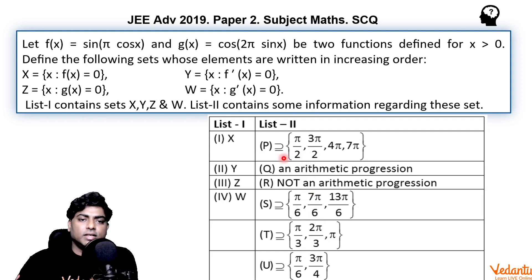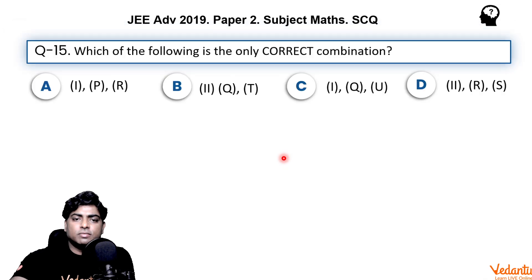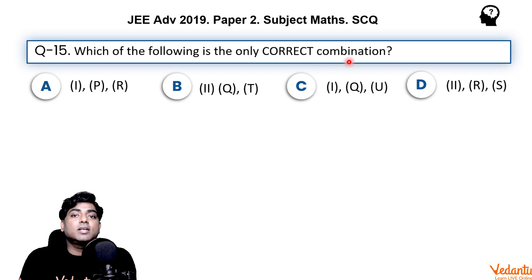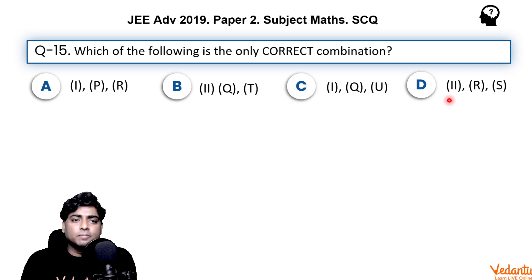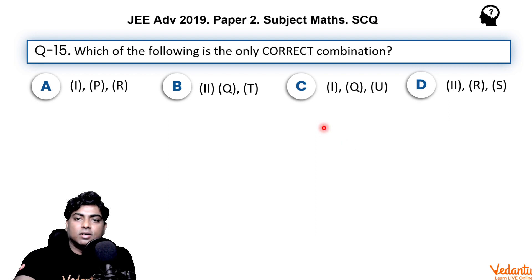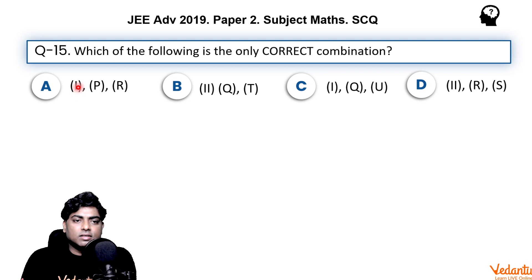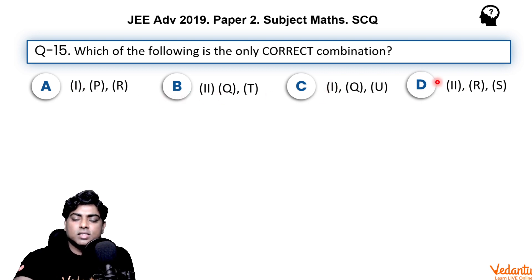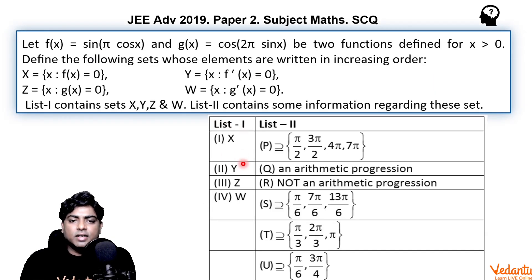The first question, question number 15, asks which is the only correct combination. In the options, only entries 1 and 2 from List 1 — that is, X and Y — are considered. Options A and C consider only entry 1, and option B considers only entry 2, so X and Y are what we need to solve.